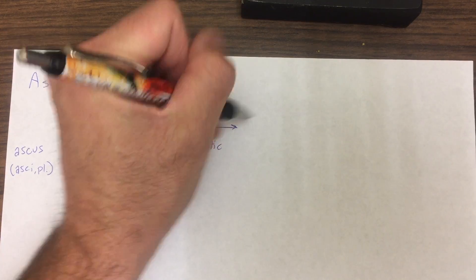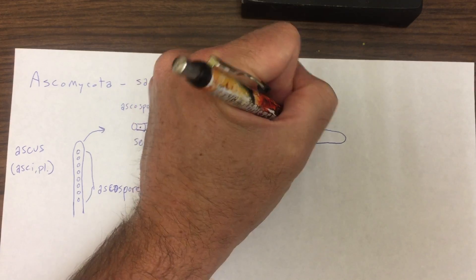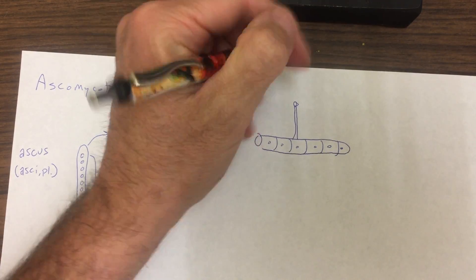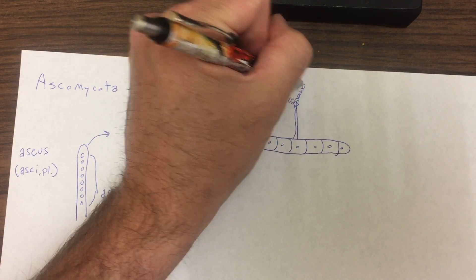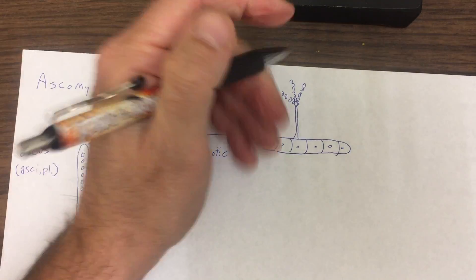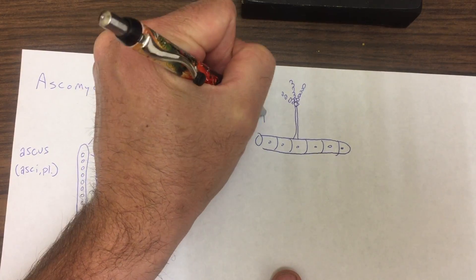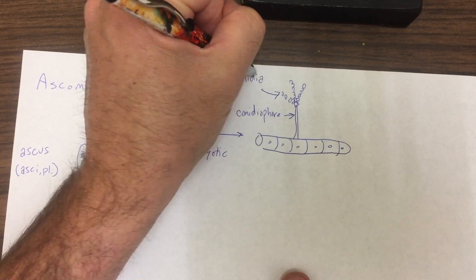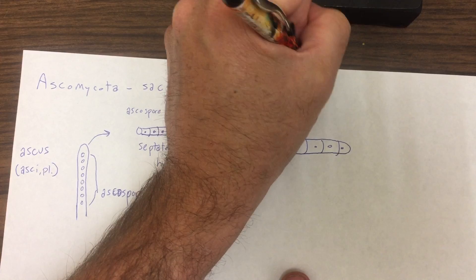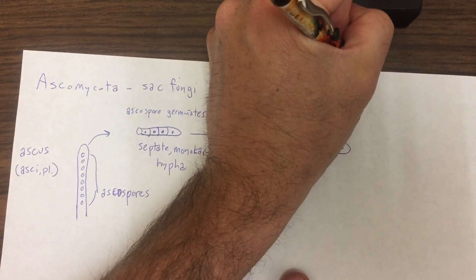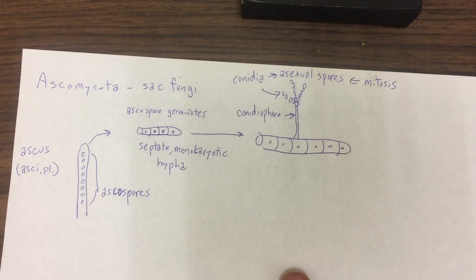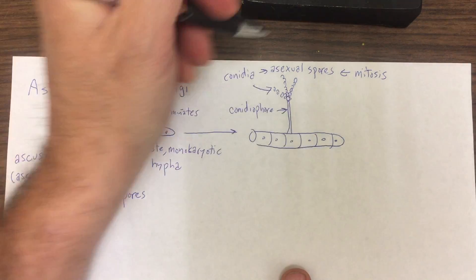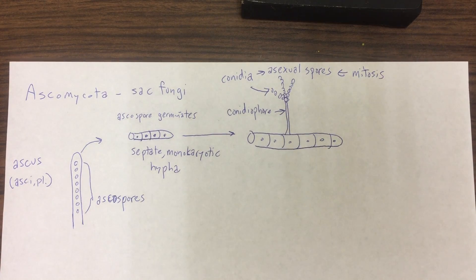But this septate monokaryotic hypha will grow just like this, and it might even produce many of a diverse number of kinds of conidiophores, which produce conidia. And conidia, remember, are asexual spores, so they're produced by mitosis. And many ascomycetes produce just scads and scads, millions and billions of conidia. They're pretty cheap to produce, don't require a lot of energy.